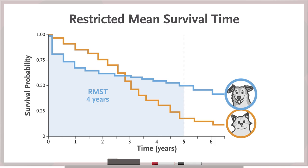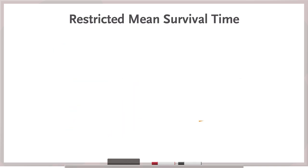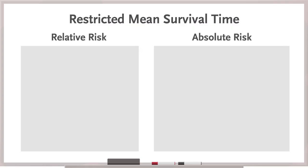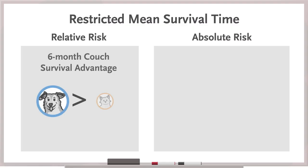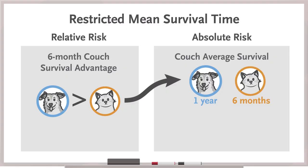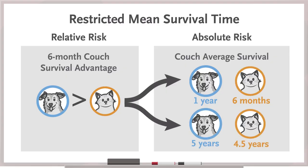Two points to keep in mind. First, it's wise to interpret the restricted mean survival time in the context of the absolute and not just relative risk. For example, a six-month survival advantage for dog couches over cat couches could mean an average survival of one year in the dog group versus six months in the cat group, or five years for dog couches compared with four and a half years for cat couches.